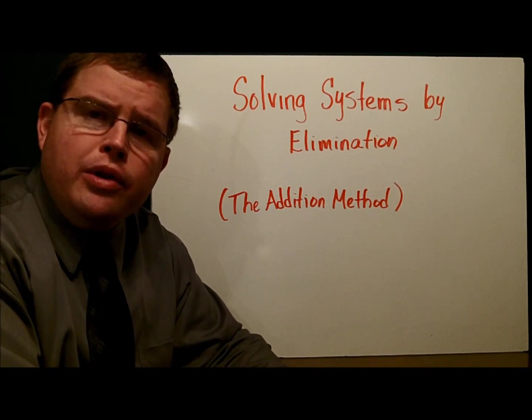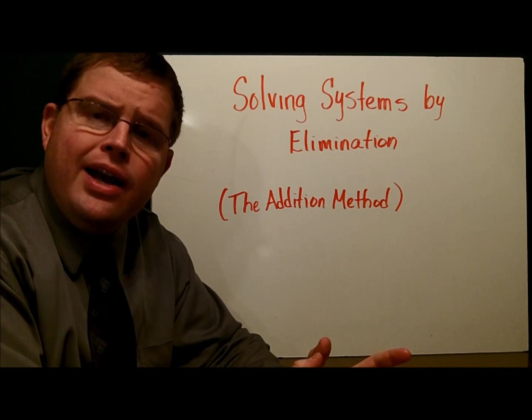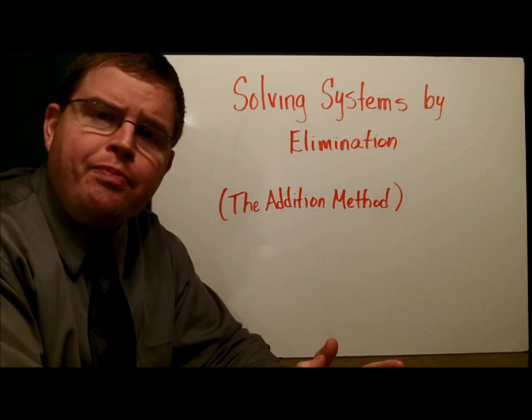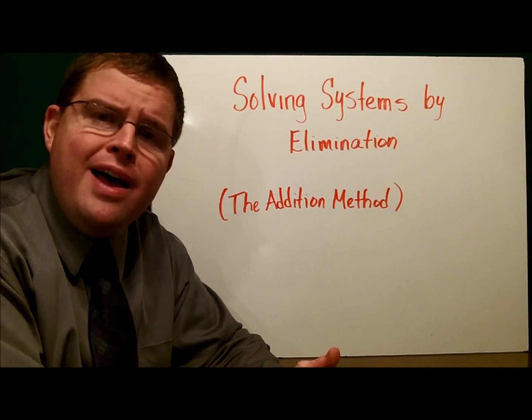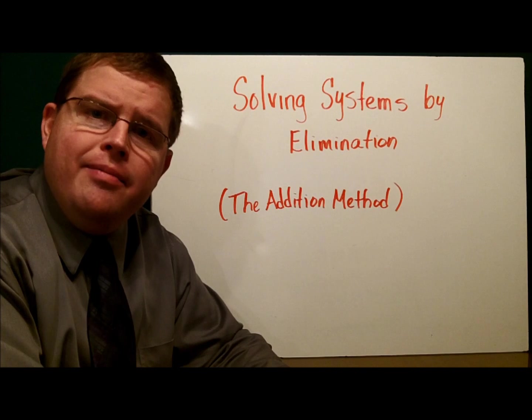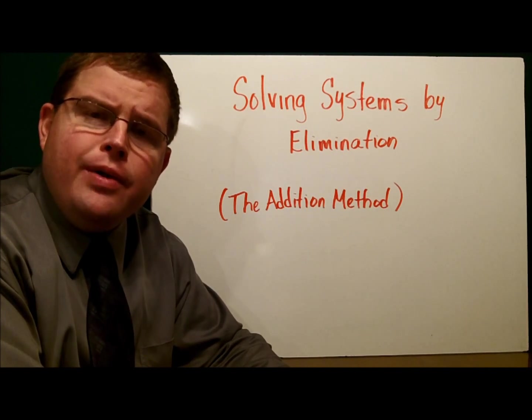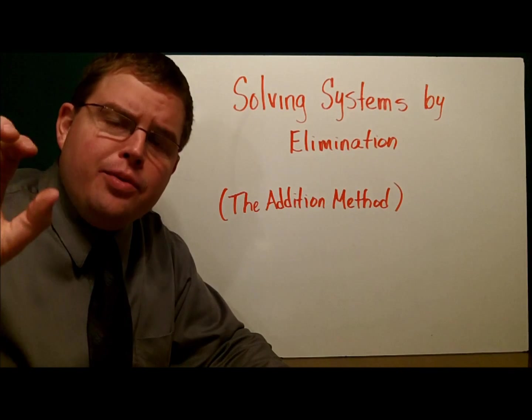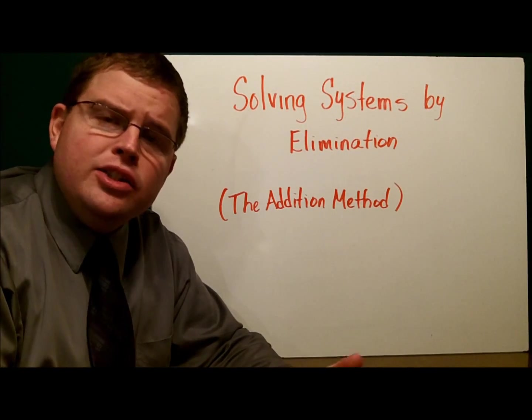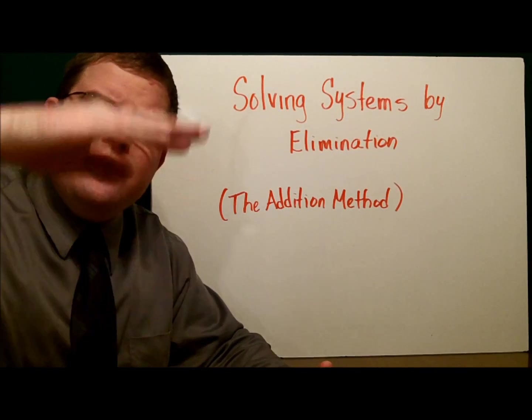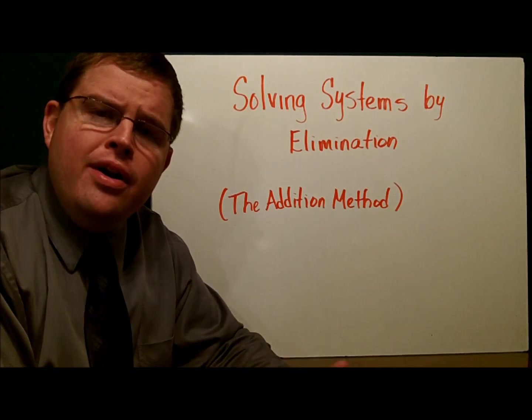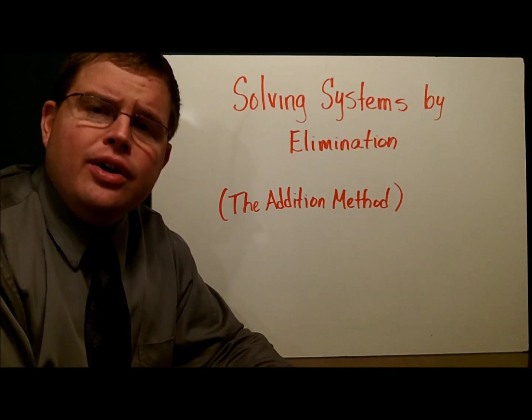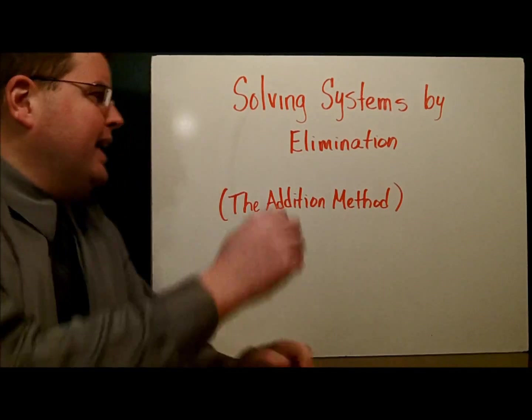When we use this method here's what we're looking for. First of all we have to get our equations in standard form with the x's and y's on the left and the constant on the right. Once we've done that we force ourselves to get an opposite variable, for example positive 3x and negative 3x so that they'll cancel out. Then we add the two equations together and we solve for our variables.